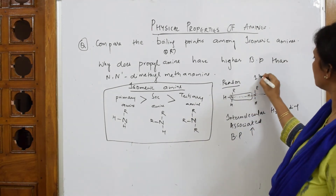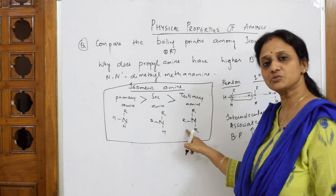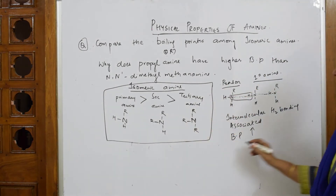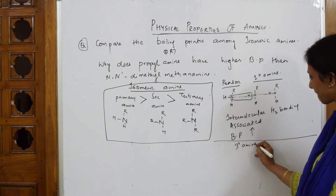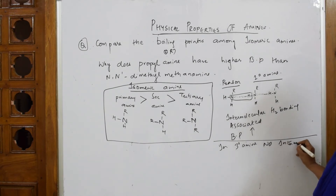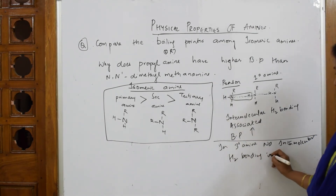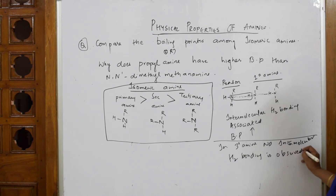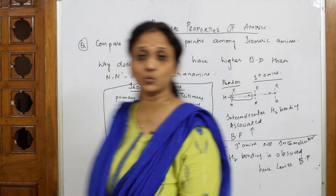This is your primary amine. Now in tertiary amine, we have no intermolecular hydrogen bonding — it cannot form. So in tertiary amine, no intermolecular hydrogen bonding is observed, hence lower boiling point.